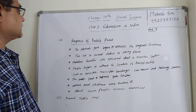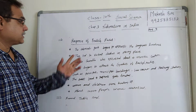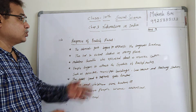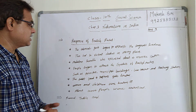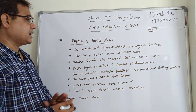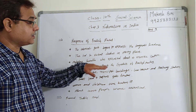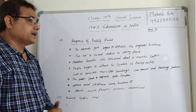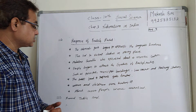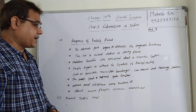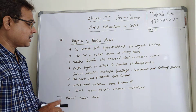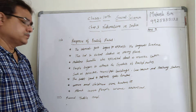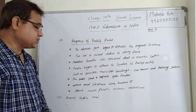Third point: Response of British rulers. The colonial government began to arrest Congress leaders. This led to violent clashes in many places. Mahatma Gandhi was arrested about a month later. People began to attack the symbols of British rule — police stations, principal buildings, lockups, and railway stations. The government tried to repress the movement. Women and children were beaten up badly.